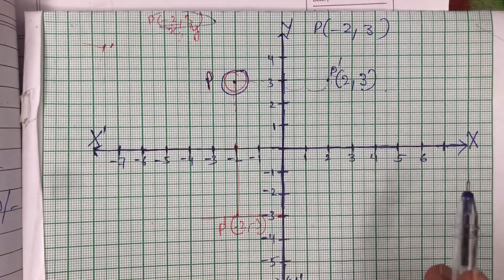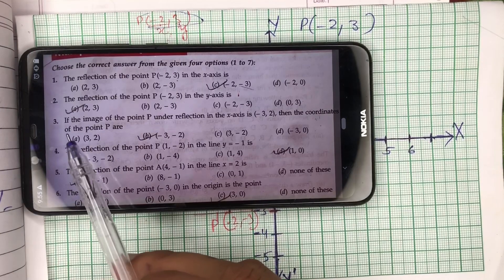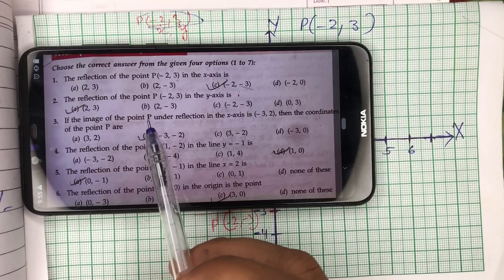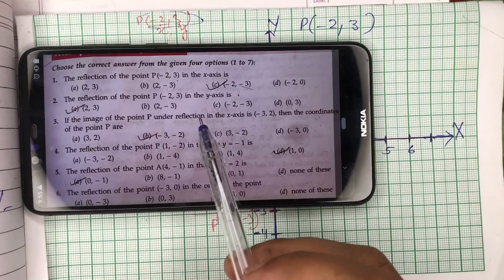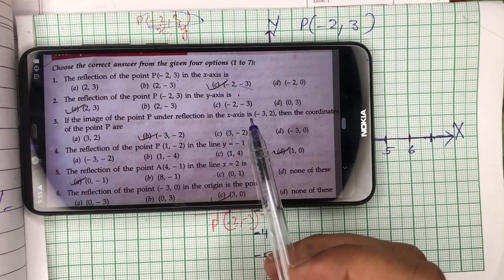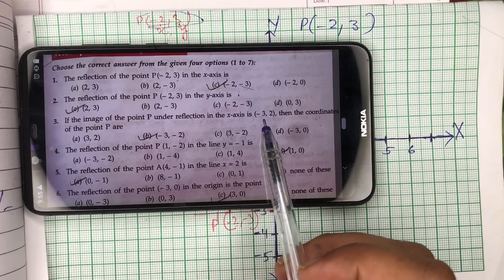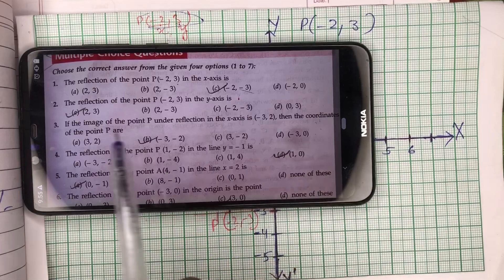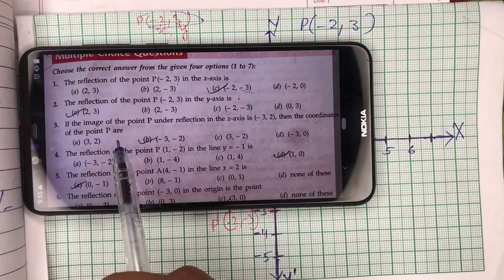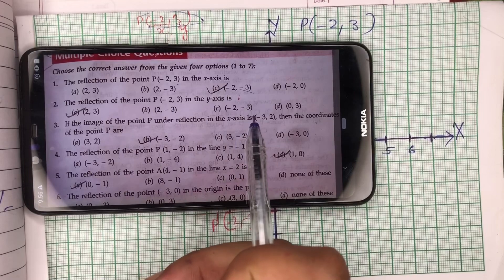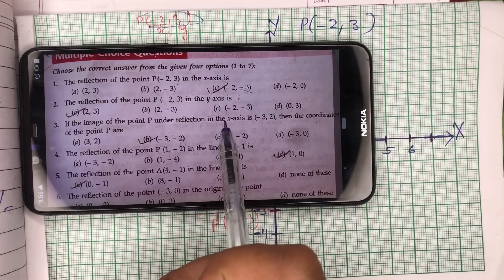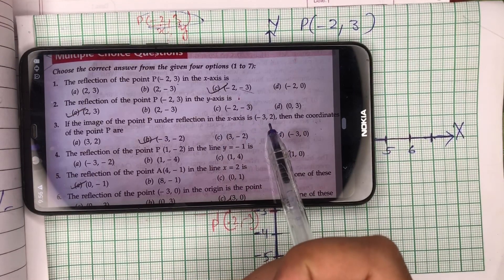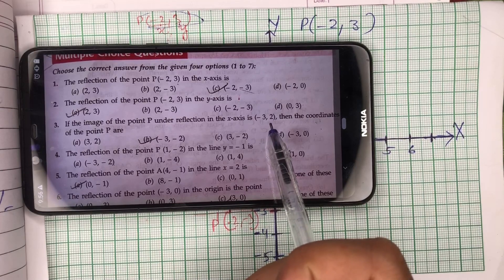Chaliye, ab next question dekhte hain. Question number 3: If the image of the point P under reflection in X-axis is (-3, 2), then the coordinates of the point P are. It means image ke coordinates diye rakhe hain. Is question mein bhi point ko reflect karna hai in the X-axis — bas itna hai ke coordinates image ke hain, and jo hamare paas after reflection aayenge, woh object ke honge.